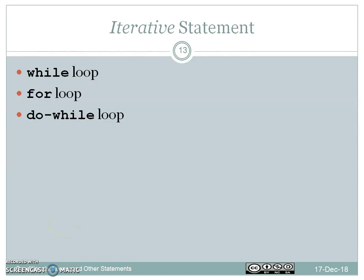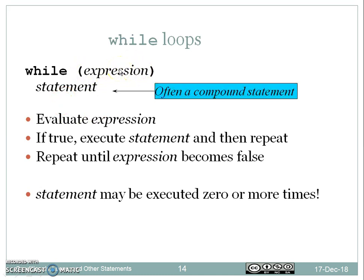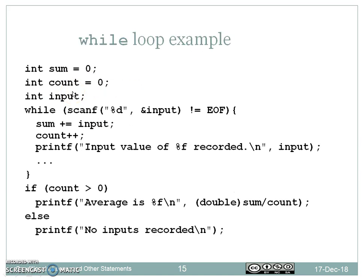Iterative statements are used when a set of statements need to be executed a number of times. Depending on the situation, if we need to execute some set of instructions repetitively, the while, for, and do-while loops are used. The syntax of while loop is: while(expression) statement. Until the expression value is true, the statements will be executed repetitively; until the expression value becomes false, this statement — which may be a compound statement or a set of instructions — will be used.